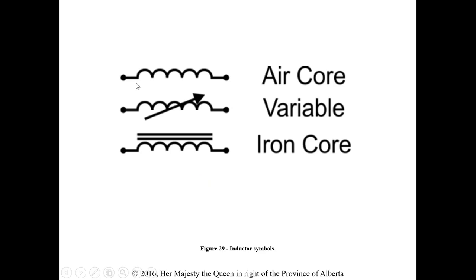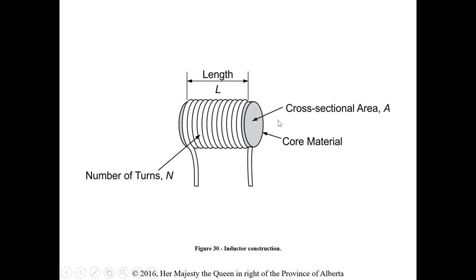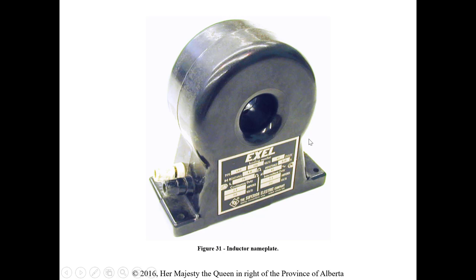Inductors use different symbols: air core, variable (with an arrow), and iron core (with two lines). Factors that affect inductance are the number of turns, the type of core material, the cross-sectional area of the core, and the length of the conductor. Number of turns is directly proportional — if turns increase, inductance increases. Permeability of core material also affects it — if permeability increases, inductance increases. A larger cross-sectional area also improves inductance. Most of the loads we hook up are inductors.